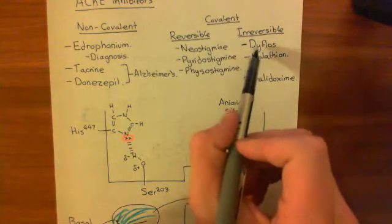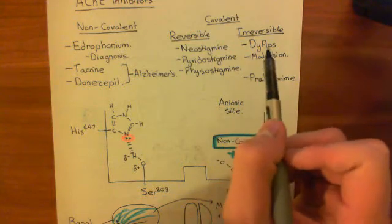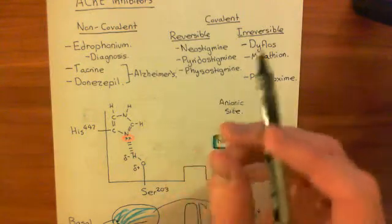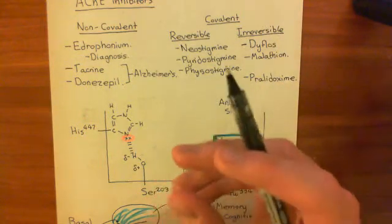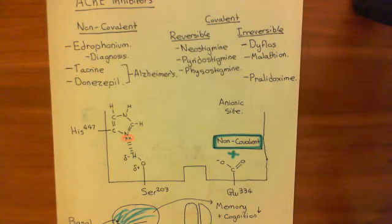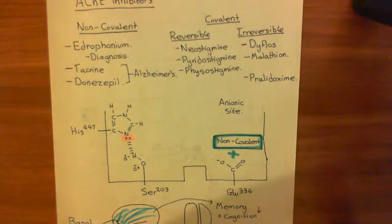Diflos is used to treat glaucoma, because it will inhibit the acetylcholinesterase enzymes in those neuromuscular junctions between the neurons and the muscle cells of the ciliary body. Therefore, the acetylcholine signals will be much greater than usual, stimulating over-contraction of the cells of the ciliary body, leading to the pulling back of the iris, the opening of the passageway to the canal of Schlemm, and the drainage of the anterior chamber of the eye.